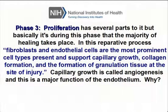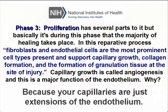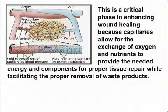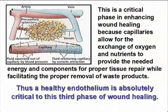Phase three, proliferation, has several parts to it, but basically it's during this phase that the majority of healing takes place. In this reparative process, fibroblasts and endothelial cells are the most prominent cell types present and support capillary growth, collagen formation, and the formation of granulation tissue at the site of injury. Capillary growth is called angiogenesis, and this is a major function of the endothelium, because your capillaries are just extensions of the endothelium. This is a critical phase in enhancing wound healing because capillaries allow for the exchange of oxygen and nutrients to provide the needed energy and components for proper tissue repair while facilitating the proper removal of waste products. Thus, a healthy endothelium is absolutely critical to this third phase of wound healing.